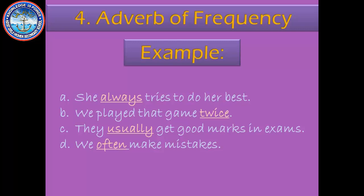Third example: 'They usually get good marks in exams.' When there are 90% chances of something, we use 'usually.' So these people tried their best to get good marks, that is why we use 'usually' — it is an adverb of frequency. Last example: 'We often make mistakes.' When there are 70% chances, we use 'often.' So 'often' is an adverb of frequency.